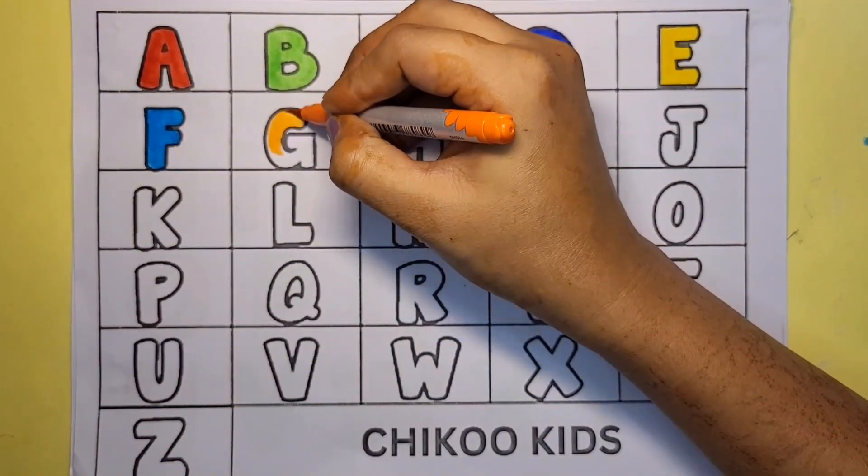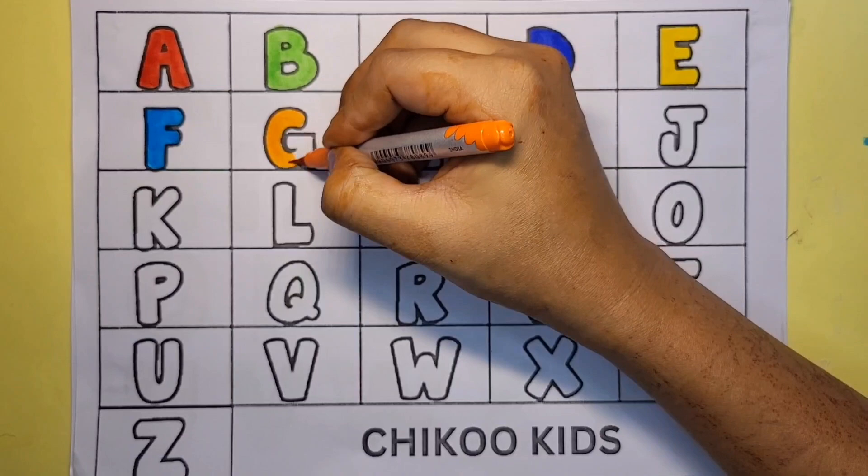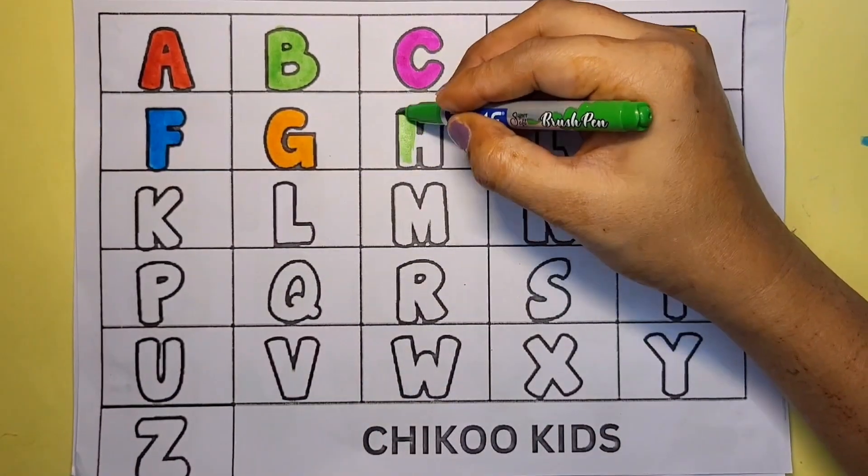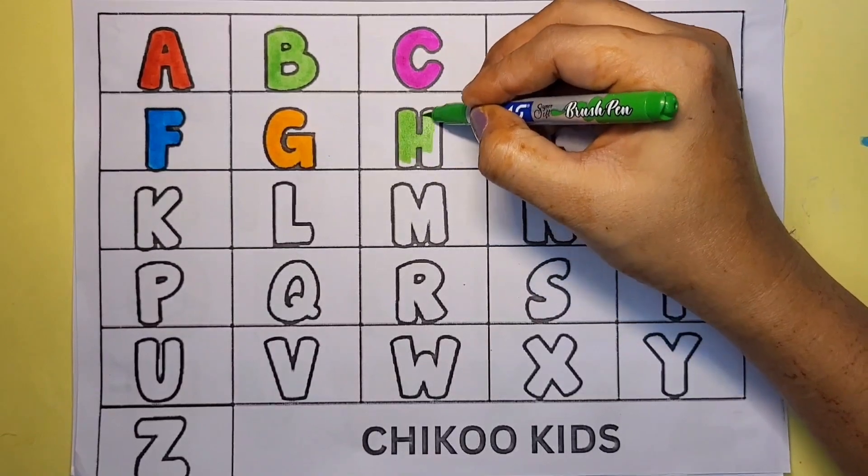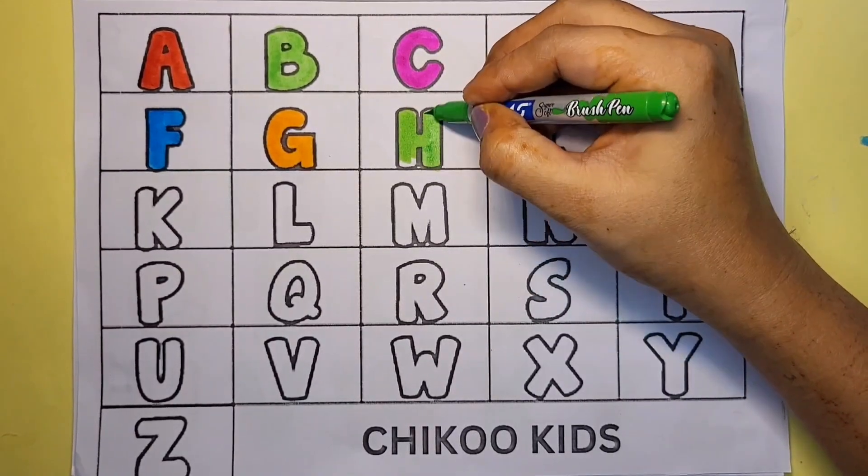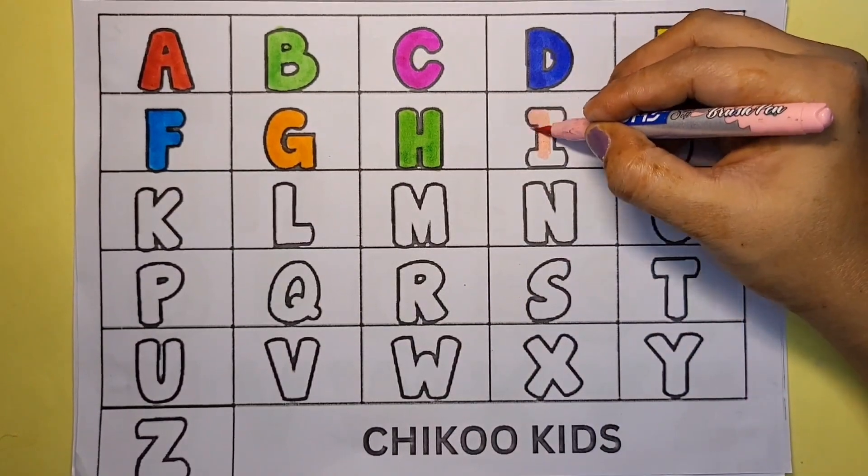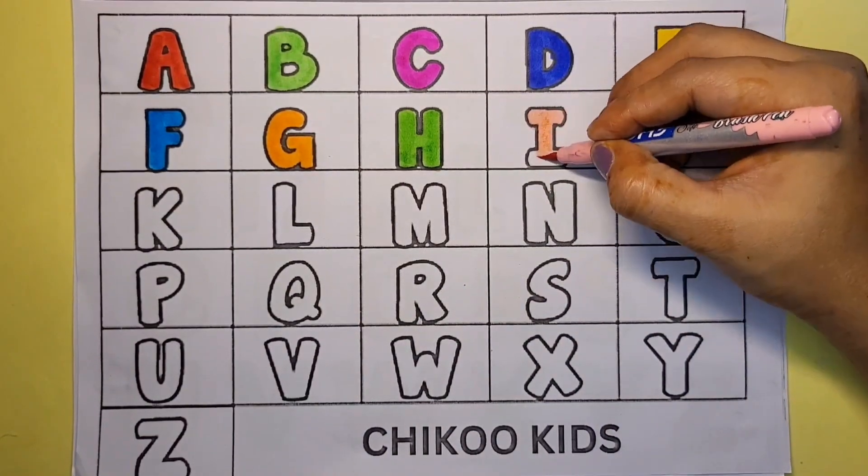Orange color G. G for bat. Light green color H. H for hen. Pink color I. I for ice cream.